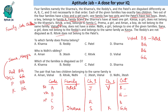We are left with Khanna and Redi for families B and C. Since Redis are not disguised as B, family C is Redi and family B is Khanna. Now we need to fill three more people's names. Ritwik is already in family C, so the second person in that family must be a girl. Aman is a boy, so Aman cannot belong to the girl-girl family — Aman belongs to family C (Redi) and Prema belongs to family B (Khanna). The remaining girl is Nidhi, completing the arrangement.